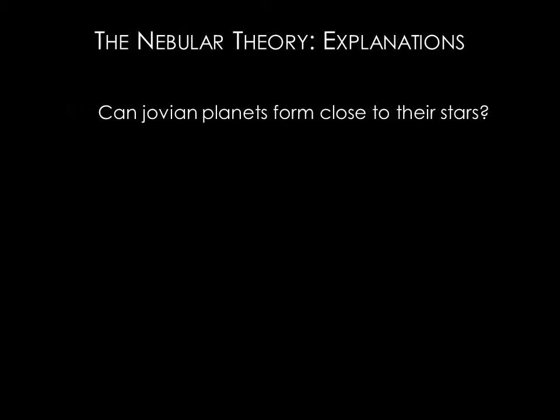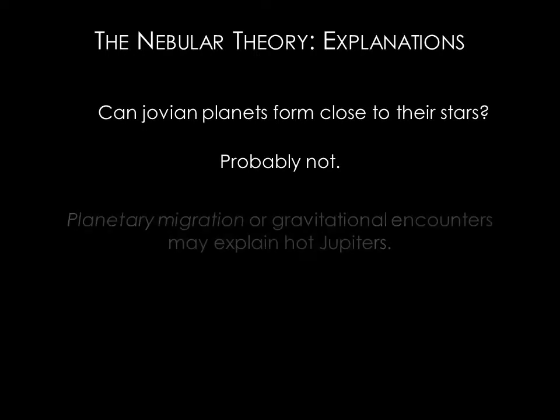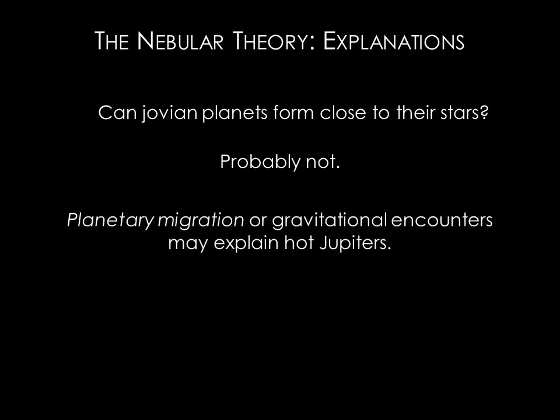These planets have triggered a re-examination of the nebular theory. If Jovian planets can form close to the stars, then the nebular theory would need to be updated. Astronomers investigated this puzzle and found evidence to support the idea that exoplanets were indeed born with circular orbits far from their stars, as predicted. These planets are thought to have undergone some sort of planetary migration. Another idea is that gravitational interactions with other massive objects force the exoplanets to closer orbits.